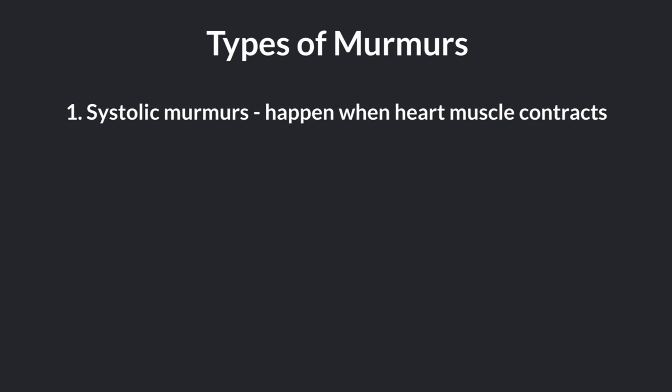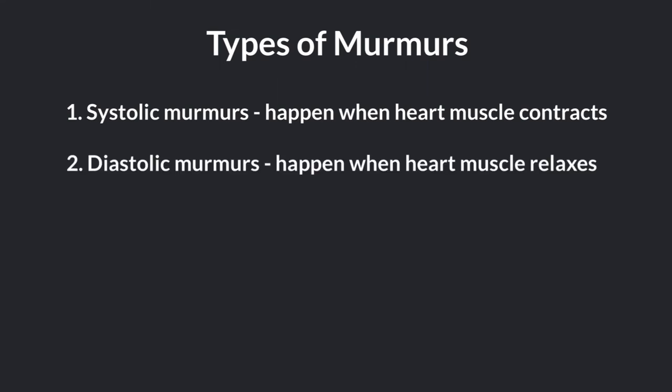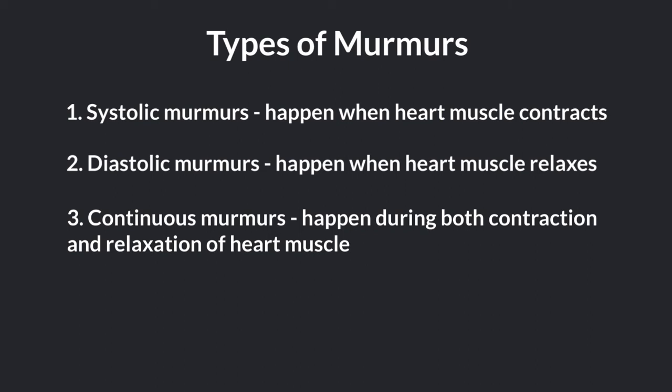There are three different types of heart murmurs classified based on when they happen during a heartbeat. The first type are called systolic murmurs, which happen when your heart muscle contracts. The second type, diastolic murmurs, happen when your heart muscle relaxes. The third type are called continuous murmurs, which happen during both contraction and relaxation of your heart. Diastolic and continuous murmurs are more likely related to heart disease; however, all murmurs should be evaluated by a physician.